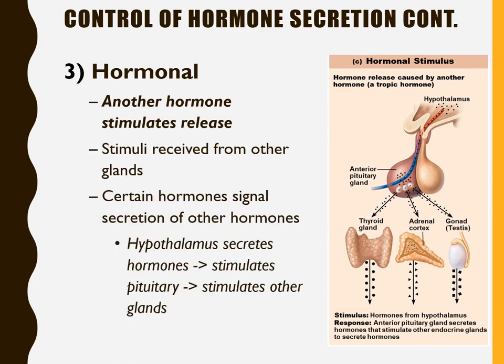The third and very common type is hormonal control, where another hormone actually stimulates a gland to release another hormone. The stimuli comes from another hormone from another gland, creating a hormone relay system. For example, the hypothalamus secretes a hormone that stimulates the pituitary gland to secrete more hormones, which then stimulate other glands to secrete their hormones.